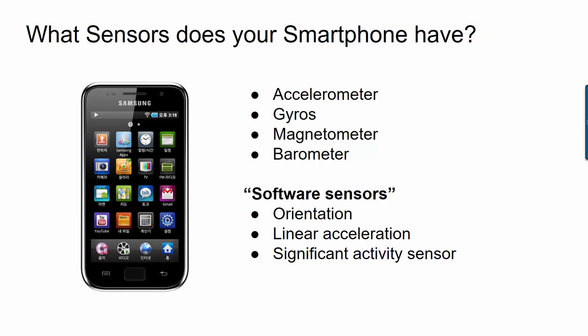Smartphones also have something called software sensors. The sensors I've mentioned so far are all physical devices that measure some physical property and convert it into a number. Software sensors don't correspond to a single physical measuring device. Instead, they're purely software that combines the output of several different sensors.